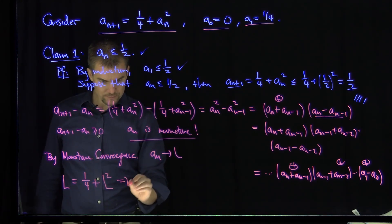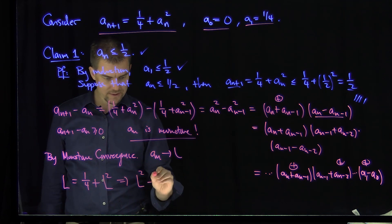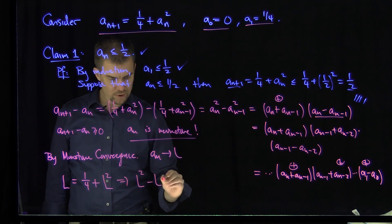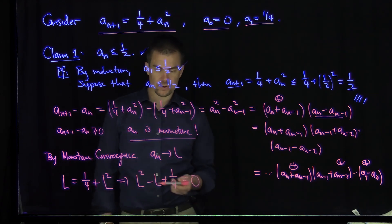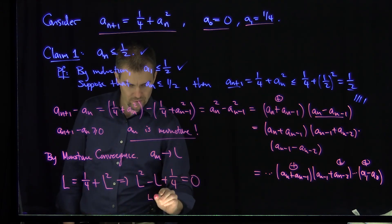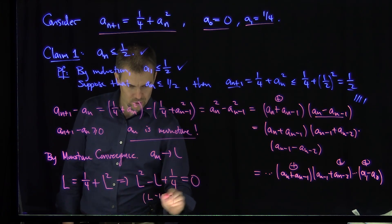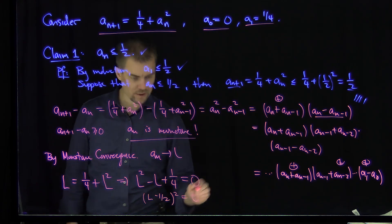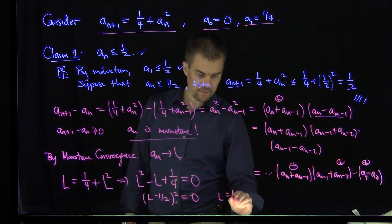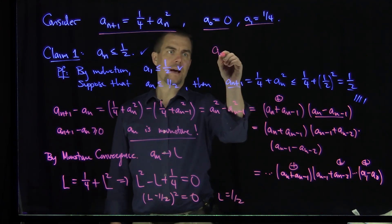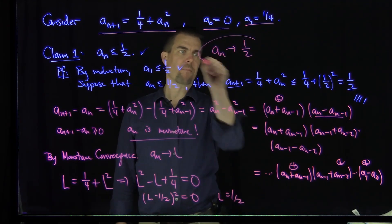We have that L^2 - L + 1/4 = 0. That is clearly a perfect square. That's (L - 1/2)^2. So I have (L - 1/2)^2 = 0. And that says that the limit of our sequence is equal to 1/2. So L is 1/2. Beautiful. And I have a_n converges to 1/2 by monotone convergence.